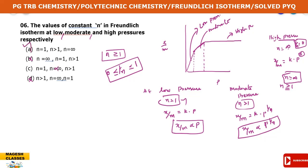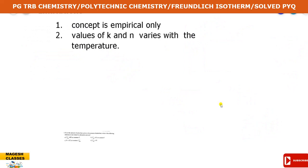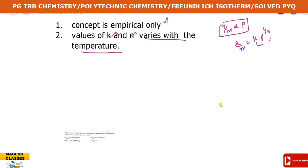The limitations of Freundlich adsorption isotherm: first, it is empirical only - the surface coverage x by m is directly proportional to pressure, but this is an empirical relation with no strict experimental derivation. Second, the values of k and n vary with temperature, so although k and n are called constants, they change with temperature. Third, the Freundlich isotherm is unable to explain the kinetics of adsorption - first order, second order, or third order reactions cannot be explained by it.